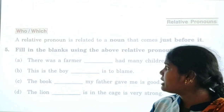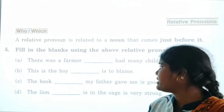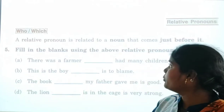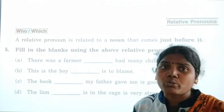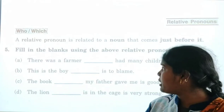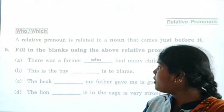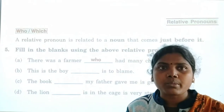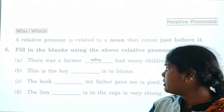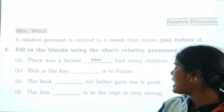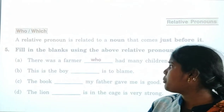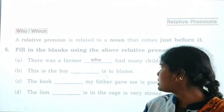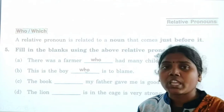First: 'There was a farmer ___ had many children.' The answer is 'who' — so: 'There was a farmer who had many children.' Second: 'This is the boy ___ is to blame.' The correct relative pronoun is 'who' — 'This is the boy who is to blame.' Using 'which' here would be wrong.